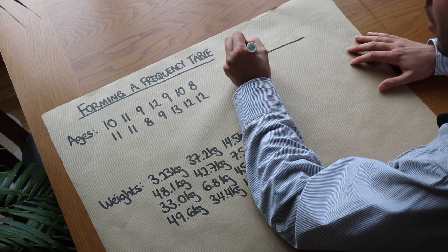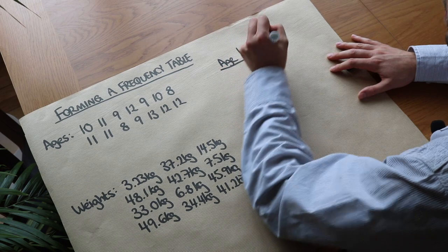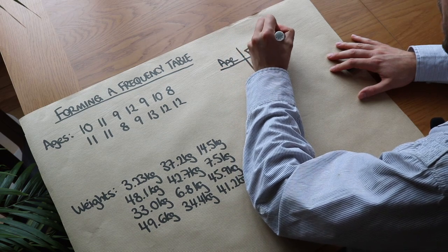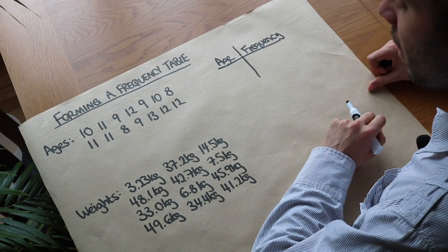So if we have a column for age and we have a column for something called frequency, what frequency means is how commonly a value occurs. How many times does that value occur?